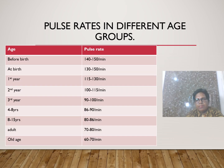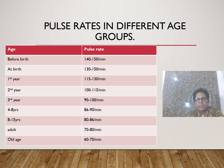Pulse rate varies by age group: fetus (before birth) 140–150/min; at birth 130–150/min; first year 115–130/min; second year 100–115/min; third year 90–100/min; 4–8 years 86–90/min; 8–15 years 80–86/min; adult 70–80/min; old age 60–70/min.